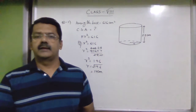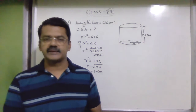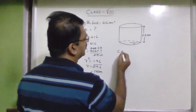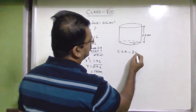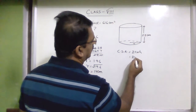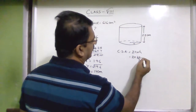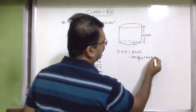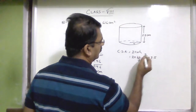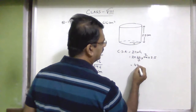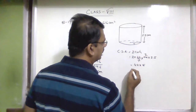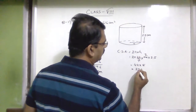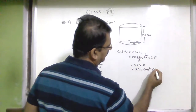Now we can easily find the curved surface area since the height is already given. The formula for curved surface area of a cylinder is 2πrh. So 2 × (22/7) × 14 × 2.5 = 44 × 5 = 220 centimeter square. That is the curved surface area.